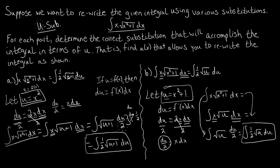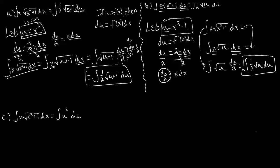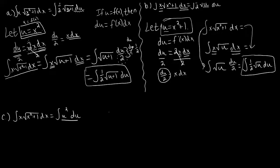We've done part A and part B. Let's look at part C. Part C tells us we want to translate that original integral with respect to x into just an integral that gives us u squared du. This one's going to be interesting. In order to make this substitution work, let's do a little brainstorming. Since we changed the entire integral into something with respect to u, let's think about what happens if we take the entire integrand to be our u.